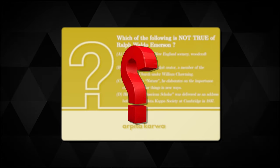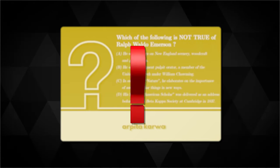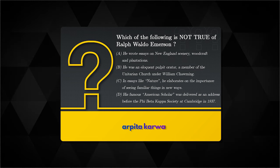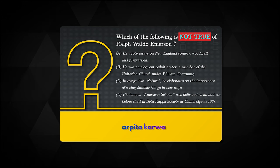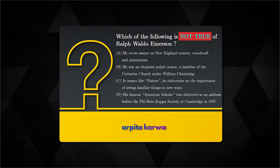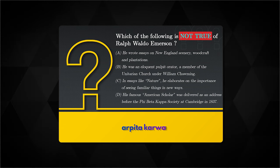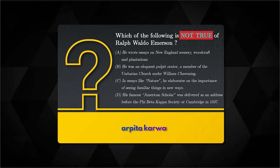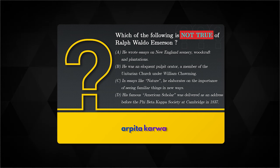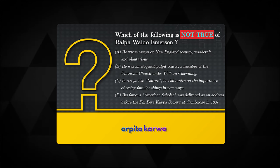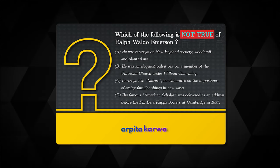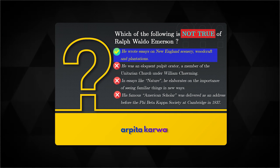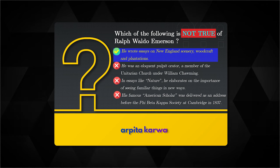Let's explore a query about Ralph Waldo Emerson that came in the recent UGC Net exam. The question is: which of the following is not true of Ralph Waldo Emerson? Pay close attention — 'not true' means we are looking for something that is false about Emerson. The correct answer is option E: he wrote essays on New England scenery, woodcraft and plantations. This is something he never actually wrote about.